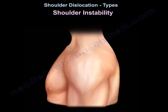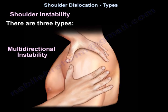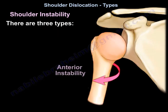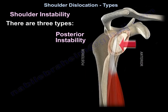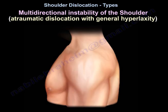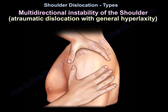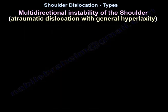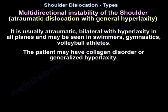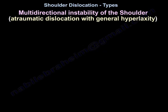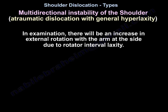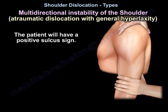There are three types of shoulder instability: multidirectional instability, anterior shoulder instability, and posterior shoulder instability. Multidirectional instability is atraumatic, usually bilateral, with hyperlaxity in all planes. It may be seen in swimmers, gymnasts, and volleyball athletes. The patient may have a collagen disorder or generalized hyperlaxity. On examination, there will be increased external rotation with the arm at the side due to rotator interval laxity, and the patient will have a positive sulcus sign.